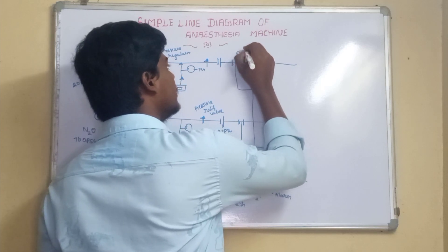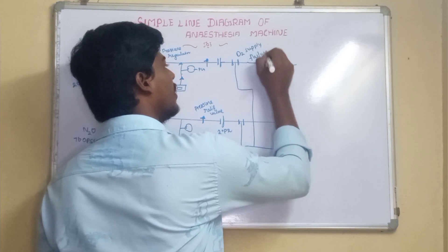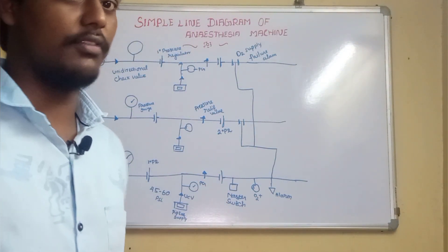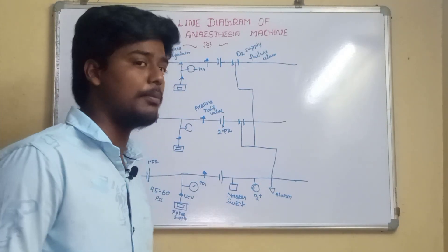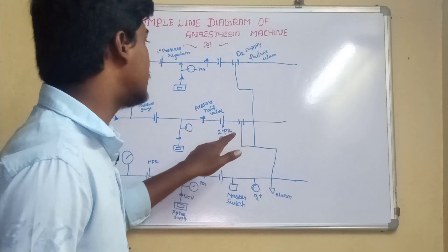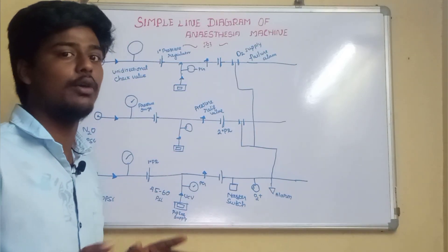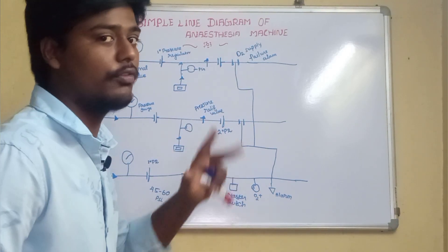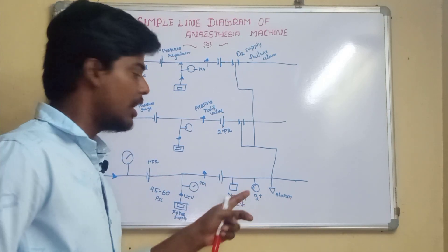The oxygen supply failure alarm activates when oxygen pressure is reduced below the manufacturer level. This prevents the delivery of a hypoxic gas mixture to the patient. When the oxygen supply fails, the alarm also cuts down the other gases — air and nitrous oxide — as a safety measure. This is one of the key hypoxic guard and safety features of the anesthesia machine.